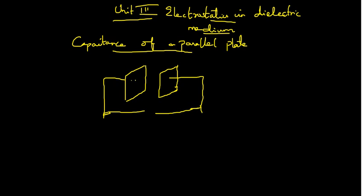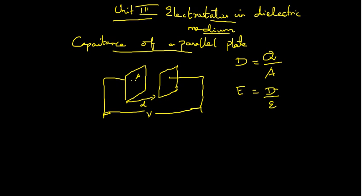Here, I can take this as A. The distance between these two parallel plates is mentioned as d. The potential is V. The electric flux density D is equal to Q divided by A — the amount of charge per unit area. There is a relation between E and D: E is equal to D divided by epsilon, or D is equal to epsilon times E.